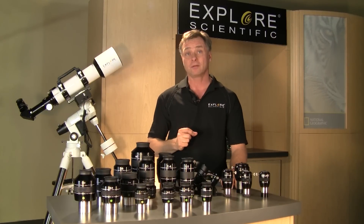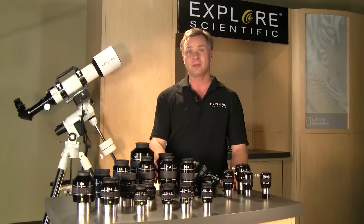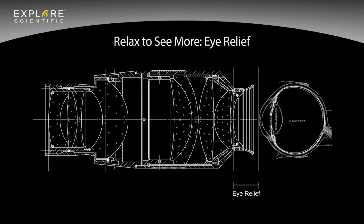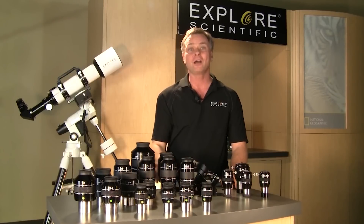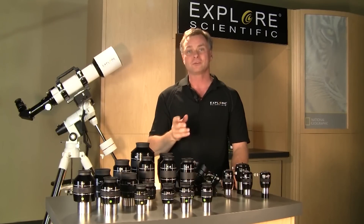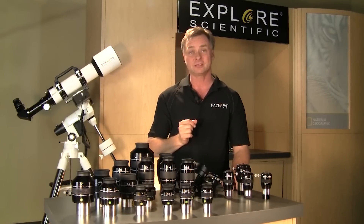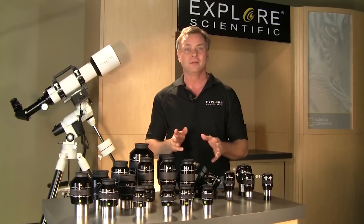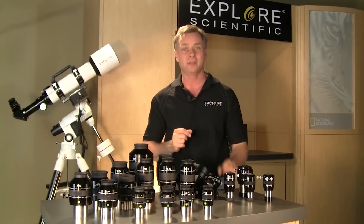You have to relax to see more — this is the importance of eye relief. Eye relief is the distance from the last surface of an eyepiece at which the observer's eye can see the full viewing angle. If the observer's eye is outside of this distance, they will not see the full viewing angle. Long eye relief eyepieces give more eye comfort, and if long enough — 18 millimeters or more — will allow observers to wear glasses when observing, which is usually needed for someone with astigmatism. Generally, short focal length, higher power eyepieces have less eye relief than long focal length, lower power eyepieces. Eye relief information is provided by the manufacturer.